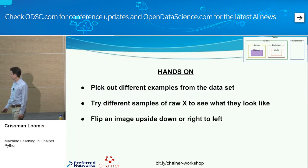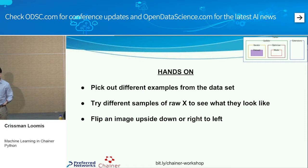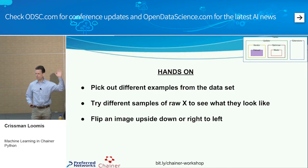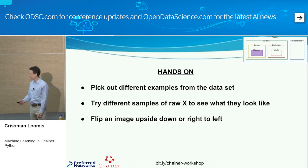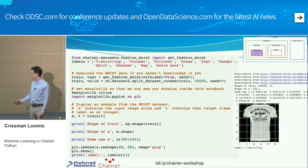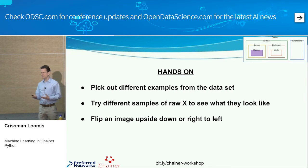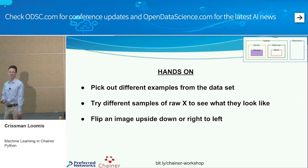I'd like to go to the first hands-on — play with the data. For those of you who are familiar with Python, take a look at the code. Pick a different picture out of the dataset — I picked the very first picture, so change the 0 to a different number and you'll see a different article of clothing. Take different samples of raw x, get yourself familiar with touching the code and making some changes. Maybe print out some different shapes or see what it looks like.